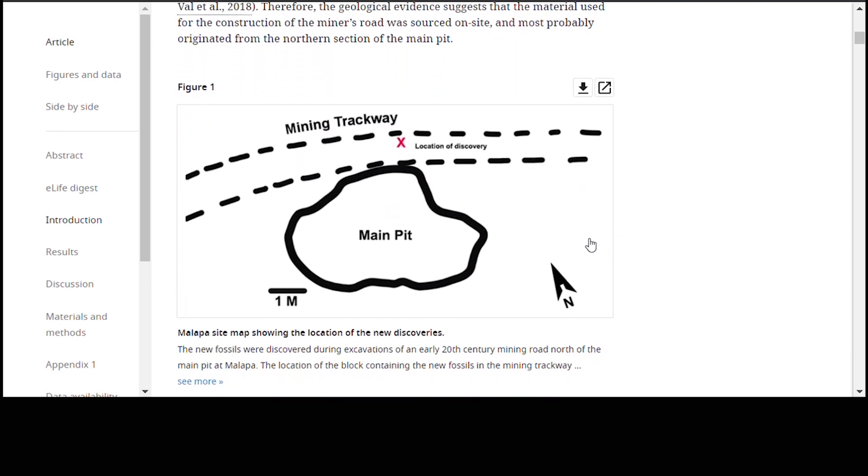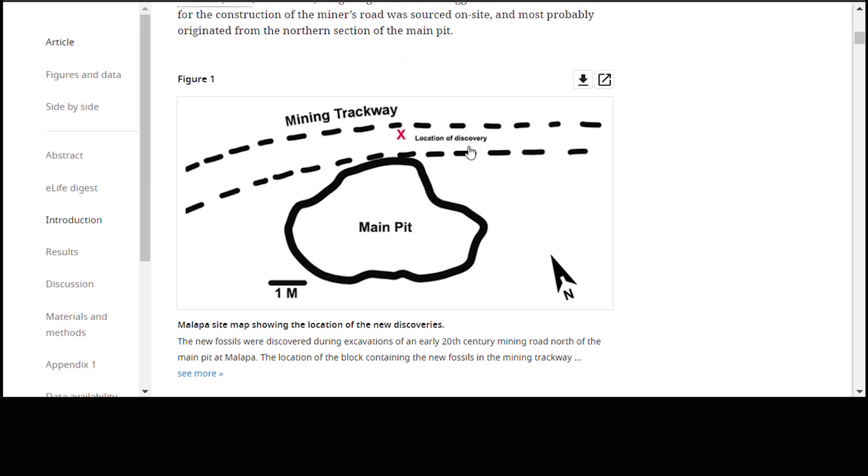So, if we go down here, they have an interesting picture here. You can see here we've got the main pit, and then we've got this mining road right here, and some material was taken out of the pit and placed to make this road, and one piece of that happened to include some fossils.